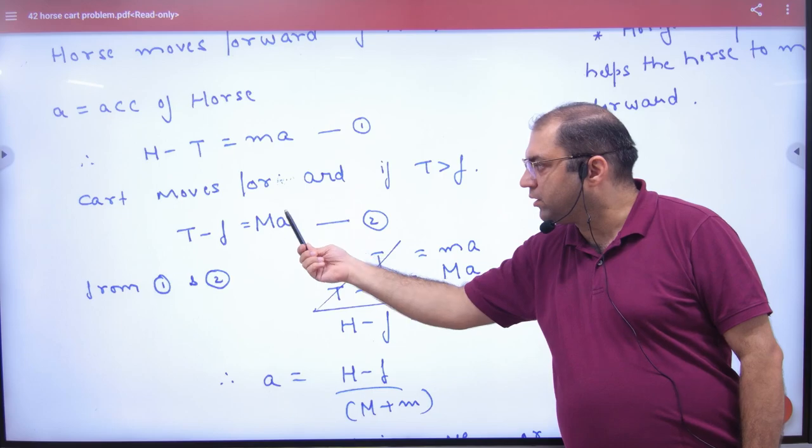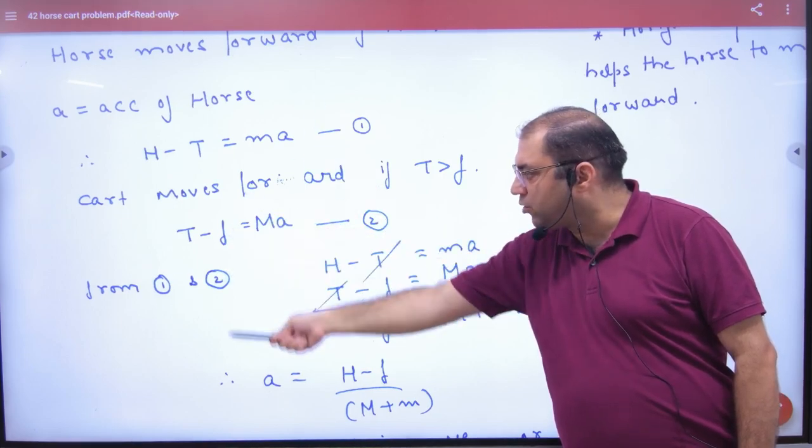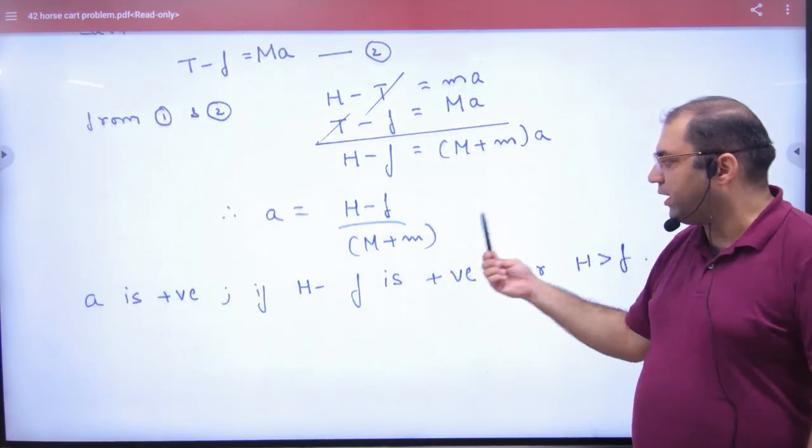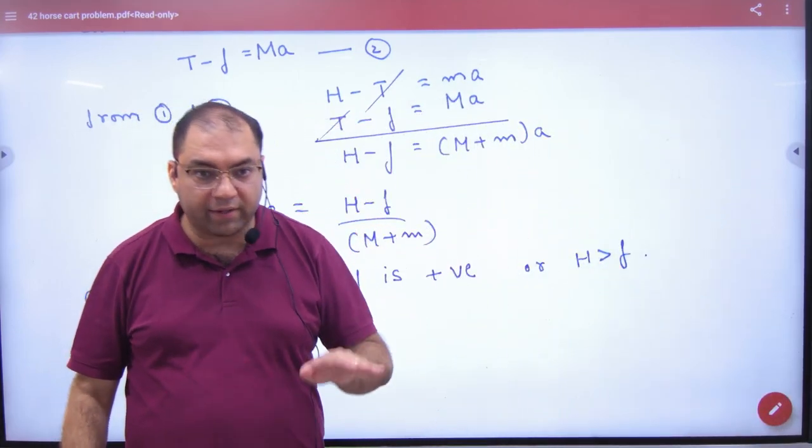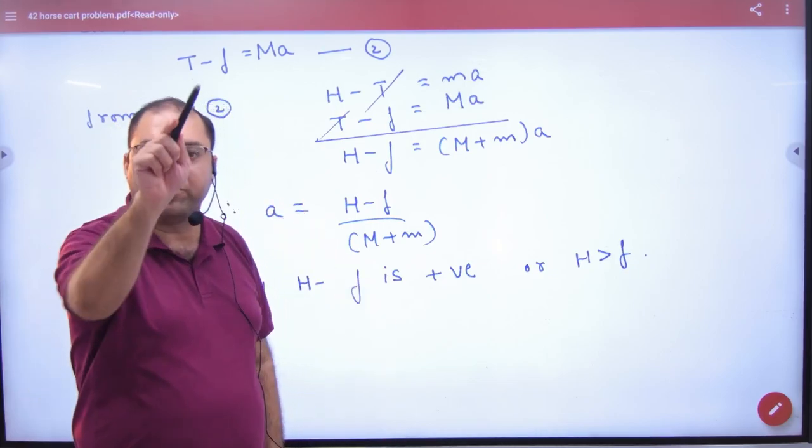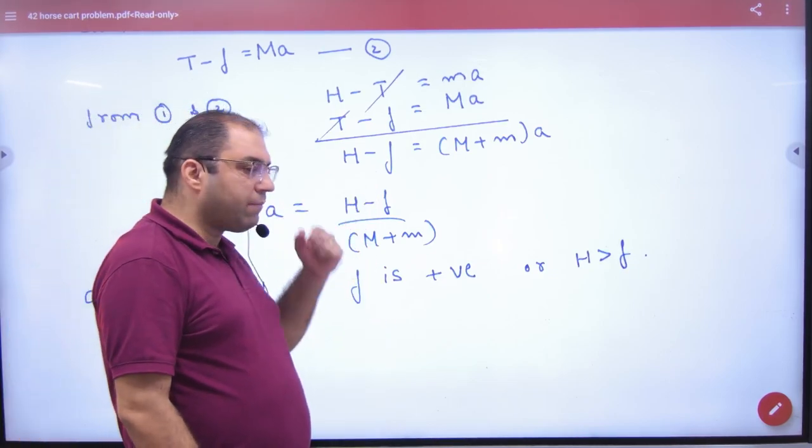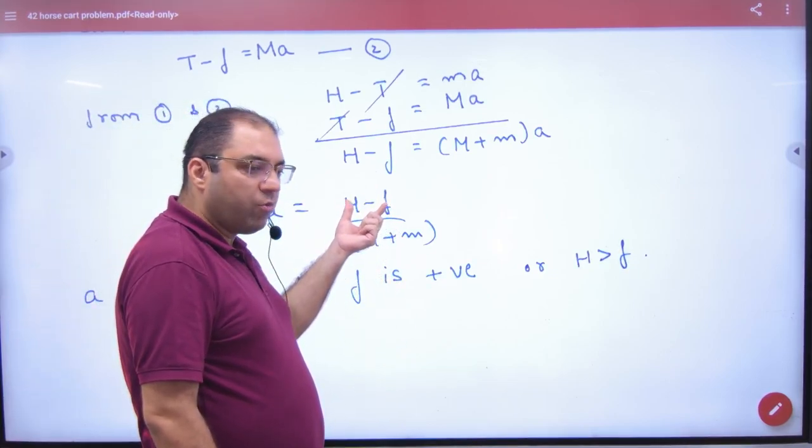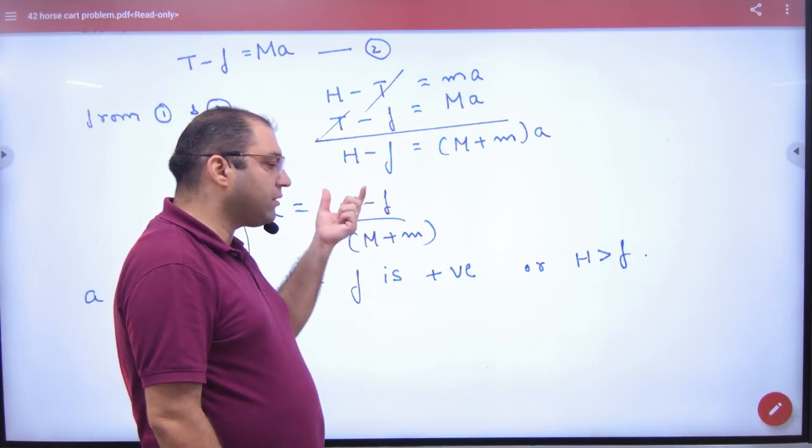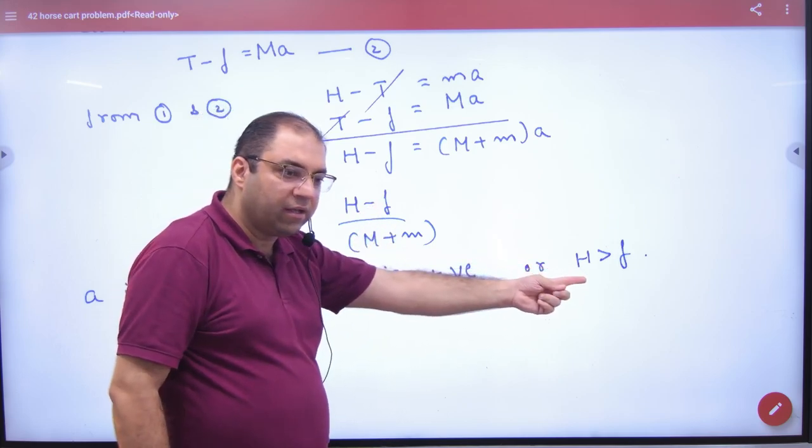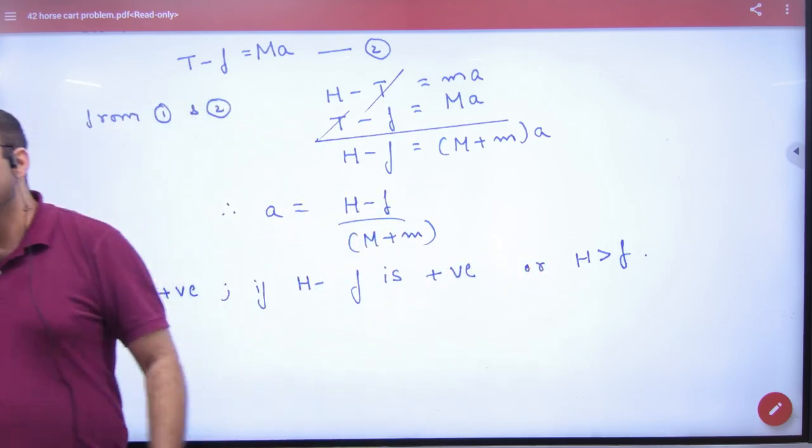Now add both equations together - the T terms cancel. Solve for acceleration A: A equals (H minus F) divided by (M plus m). If you want acceleration to be positive so that velocity increases and the system starts moving, then the numerator H minus F should be greater than zero. Therefore, H should be greater than F. This is the mathematical proof.